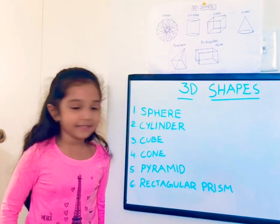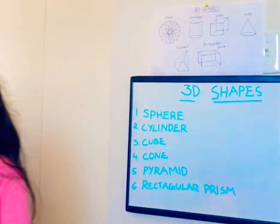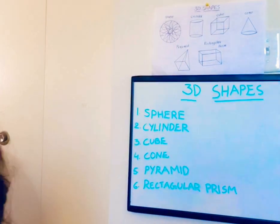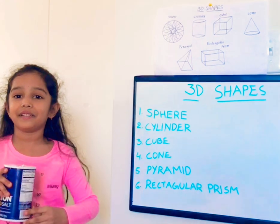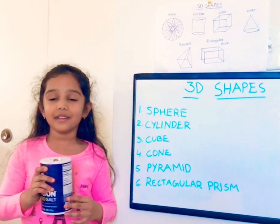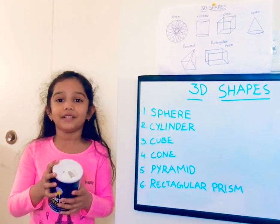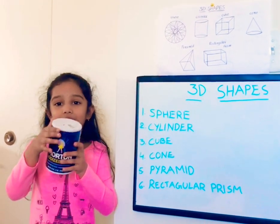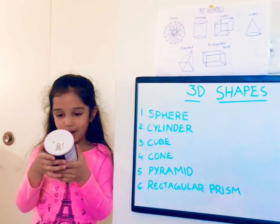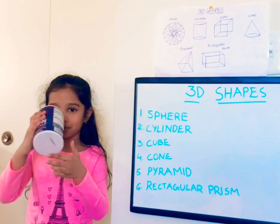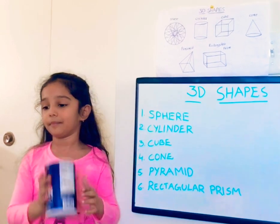Next is cylinder. This is a tin. It looks like a cylinder. It has one circle on the top and one circle on the bottom.